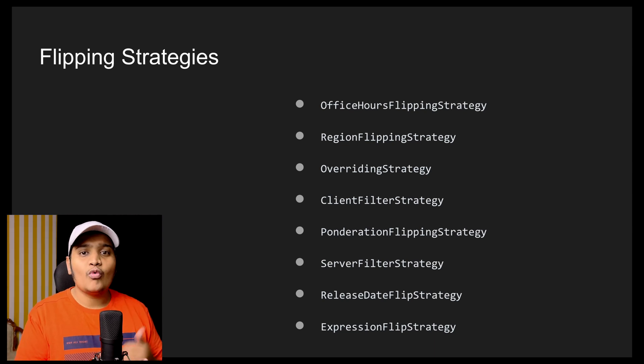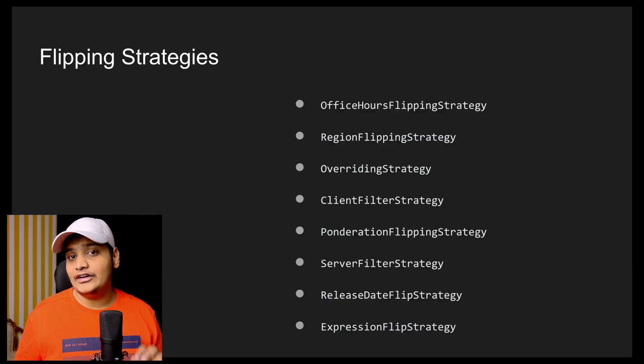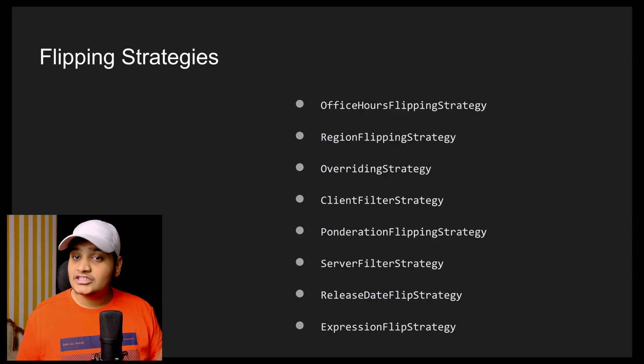The next is the Overriding strategy, which lets you override any existing strategy already applied. After that is the Client Filter strategy. If there are multiple clients using your application and you are creating a feature for particular clients, you can define the Client Filter strategy. When developing the feature, you specify which clients it should be available for — for those clients only the feature will be enabled, and for the rest it will be disabled.